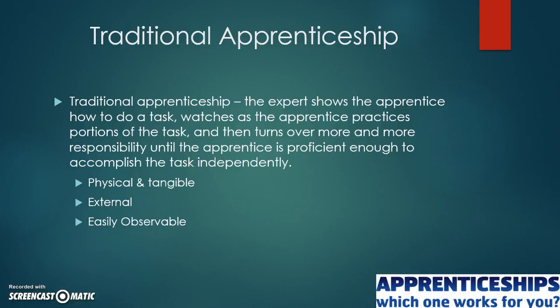The most important characteristic of traditional apprenticeship is that it is physical, it is tangible, it has to be done in front of the student or apprentice, and it is easily observable. There has been discussion about what happens in the mind of the master or expert when carrying out a particular task — and that is where cognitive apprenticeship comes in.